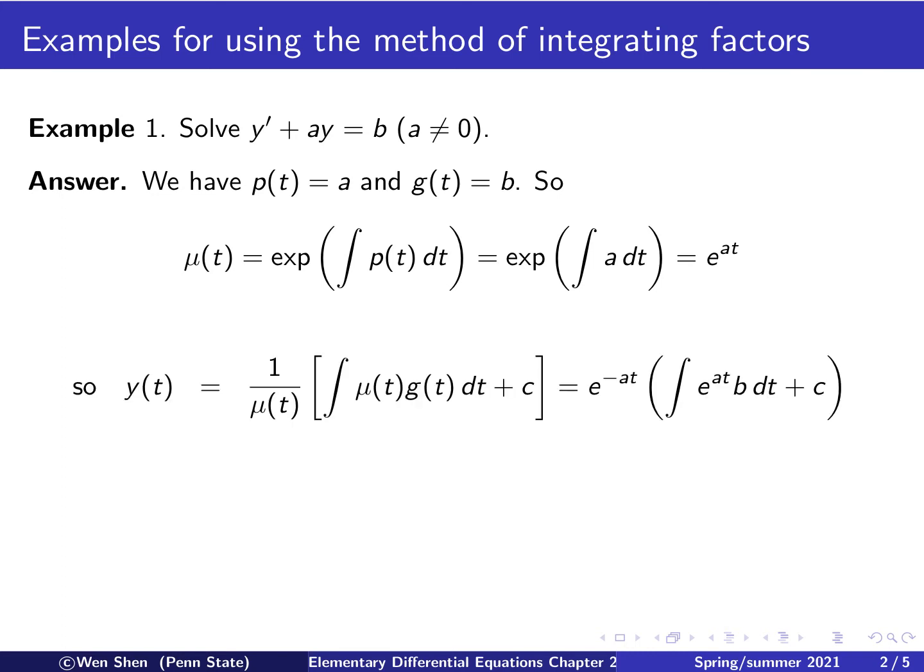Once we have computed the integrating factor mu, we can now use the formula for the solution directly. This is 1 over mu times an integral of mu(t) times g(t), plus an arbitrary constant. Let's put in mu, which is e to the at, so this is e to the negative at, and we have to integrate e to the at times b, which is a constant, dt.